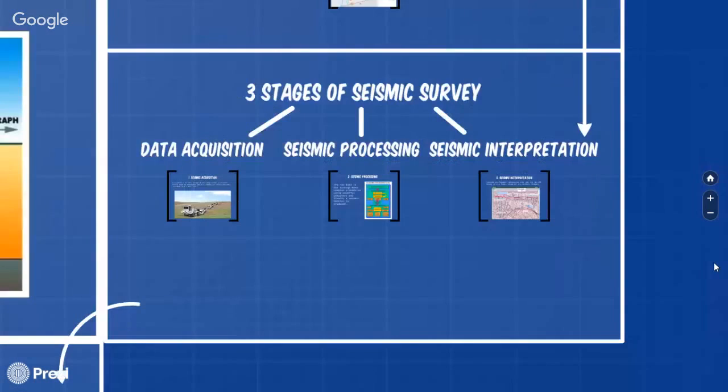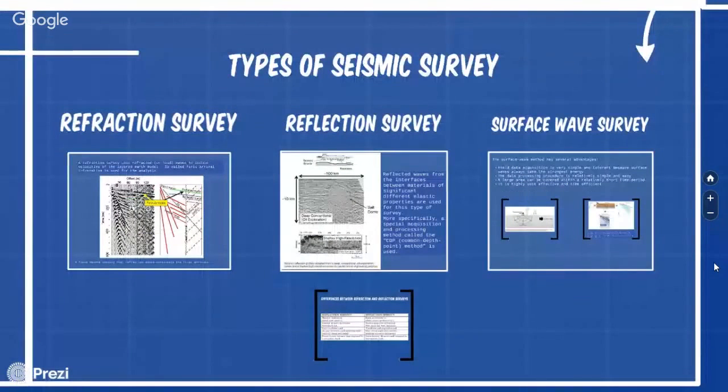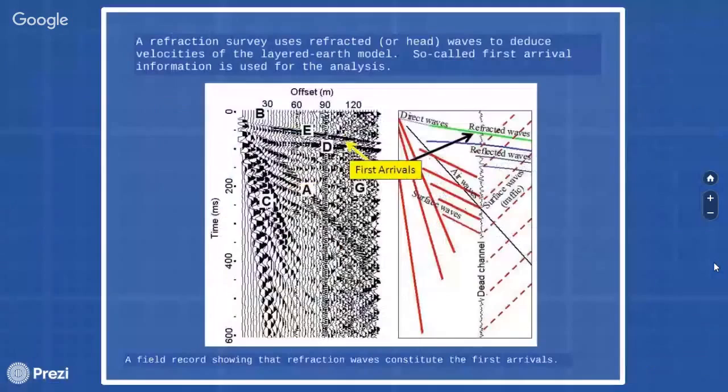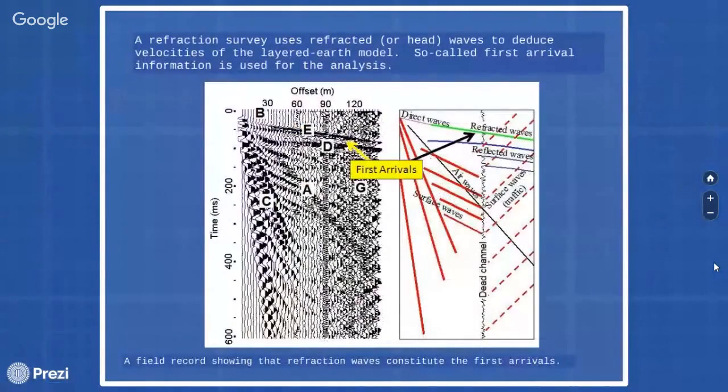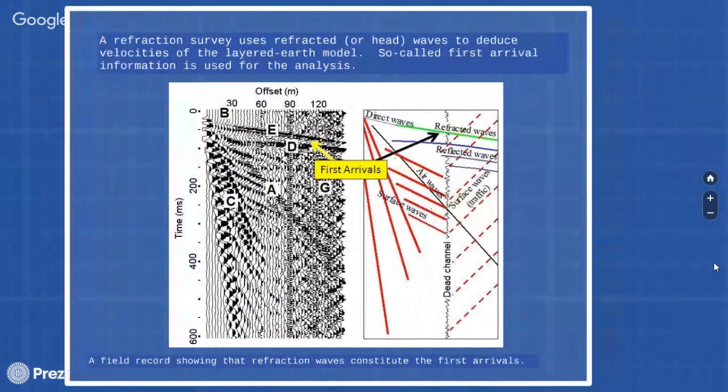There are three major types of seismic survey: refraction, reflection and surface wave, depending on the specific type of wave being utilized. First one is refraction survey. This uses refracted wave to deduce velocities of the layered Earth model. So-called first arrival information is used for the analysis. More generalized methods based on the turning wave from arbitrary velocity model have also been used in recent days. This is called seismic refraction tomography. Historically, the refraction method has been commonly used to map the depth and velocity of bedrock.